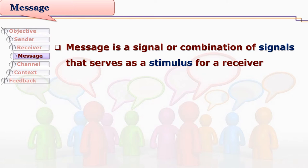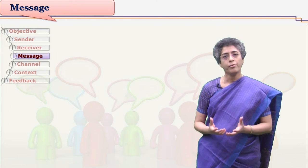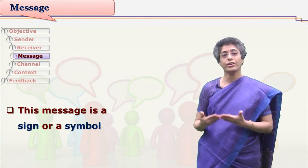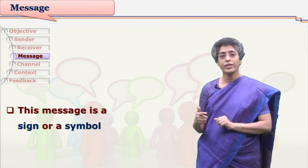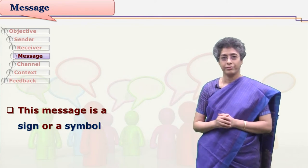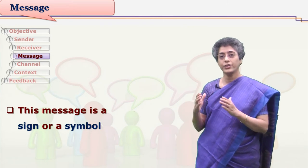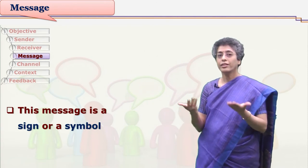We get a stimulus from the sender and then tend to respond to it. Even an angry mother's eyes are a stimulus for a child. A teacher's angry or happy face can be stimuli to learners. The form of a message is actually some signs and symbols. Whenever we talk about verbal communication, we use some language, and language is a combination — a set of some signs and symbols. In every culture, there are certain signs understood by both sender and receiver, and these sets of signs and symbols work as messages.